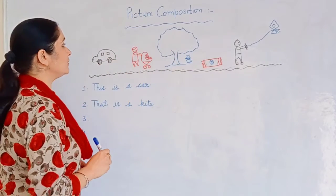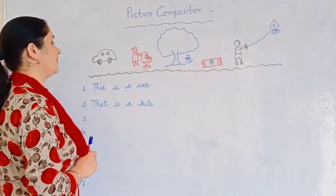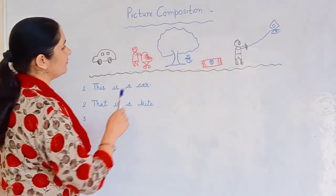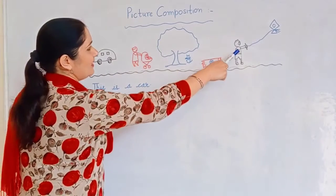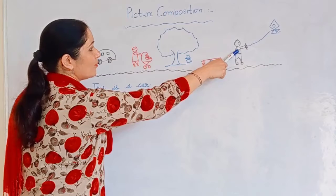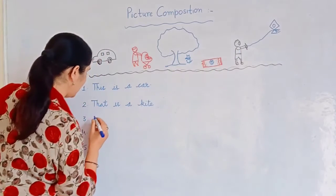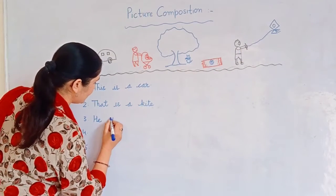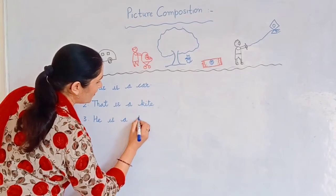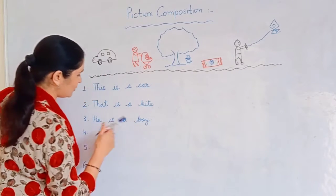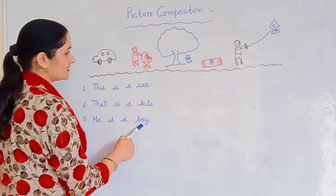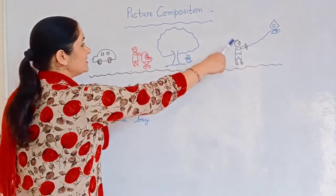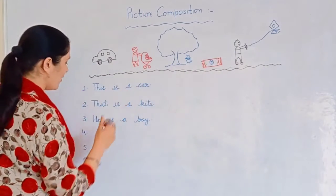Now we will use he or she. So first we will find where is he. Yes, he is a boy. So we will use he. He is a boy. Later we will write a small sentence: He is a boy.